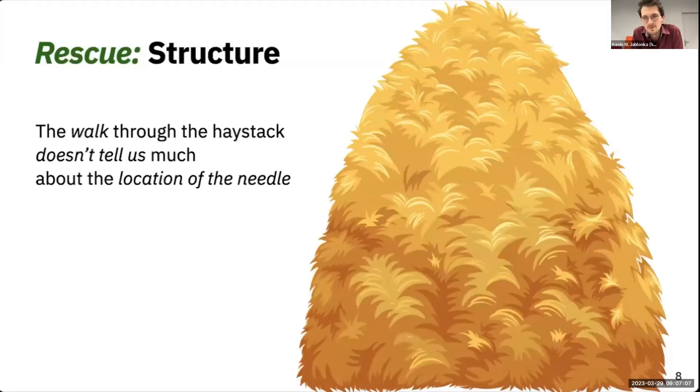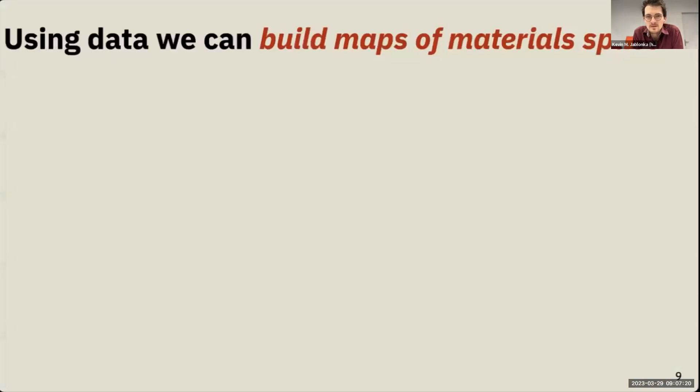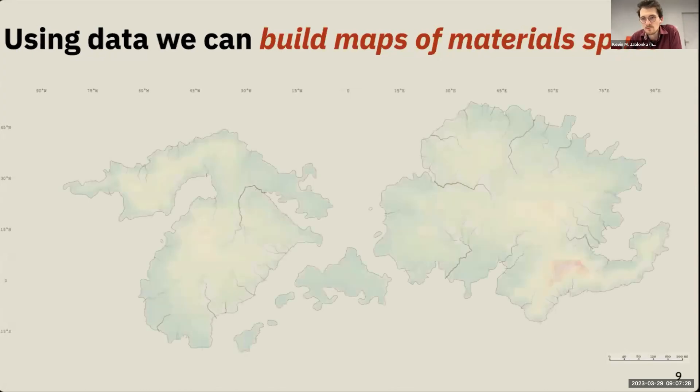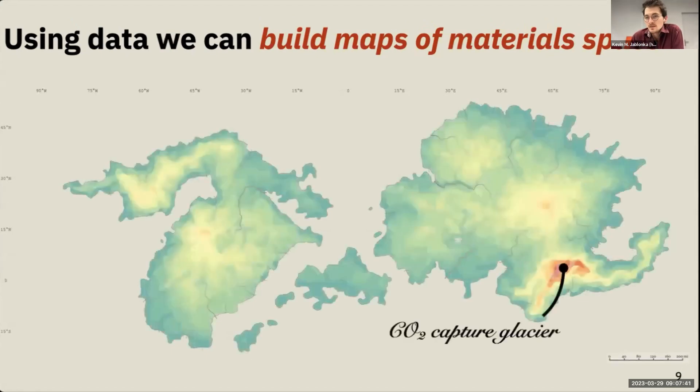Luckily we don't live in a haystack, because in a haystack we wouldn't learn much by going through it - there's no structure. Travel through the haystack doesn't tell us much about where to go next. But in material space there is structure, and we can now slowly, with measurement, simulation and data, build a map of the space and add more and more contour. With models we can capture where the interesting parts are and guide us to interesting parts in this chemical space.